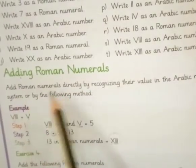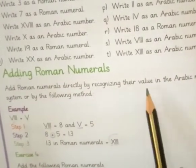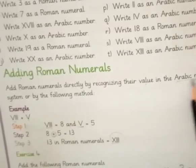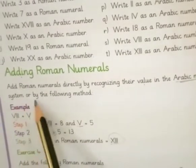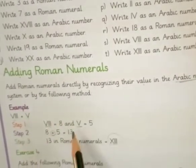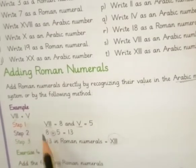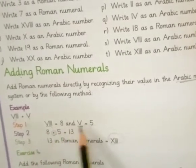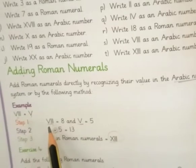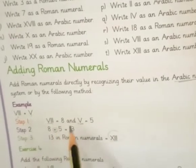Add Roman numerals directly by recognizing their value in the Arabic numbers system or by the following method. The method is this: Step one, VIII and V. We have to write these Roman numerals in the Arabic numbers.